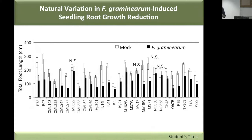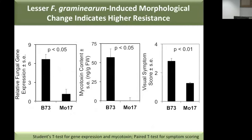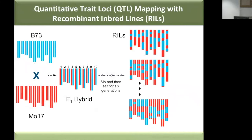Before going further, we wanted to confirm that the symptoms we observed actually tell us something about resistance level. We measured fungal gene expression, mycotoxin production, and visual symptom scoring. By all three metrics consistently, Mo17 turned out to be more resistant than B73 against Fusarium. We can then ask the question: why? What's the genetic and physiological mechanism behind this contrasting resistance level between these two genotypes?